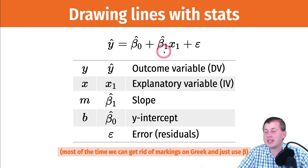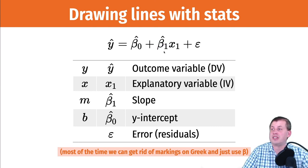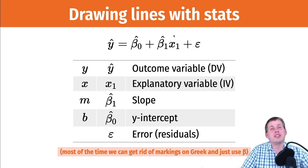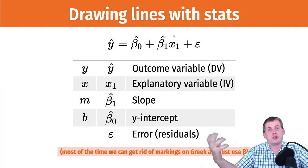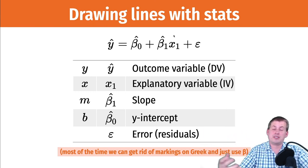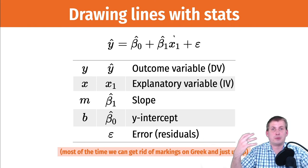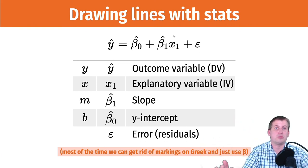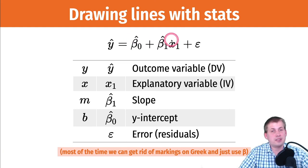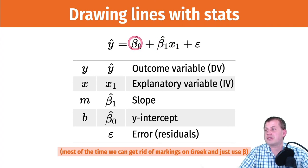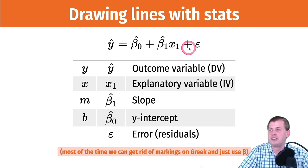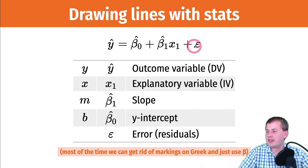Beta-0 and beta-1 are Greek letters, meaning they represent something we're trying to measure that exists in the world. We assume there's some true intercept and some true slope, and we use our sample to guess what those are. They have hats because we don't actually know what they are — we just hope they're right. X is just the x from our data set that we measured.